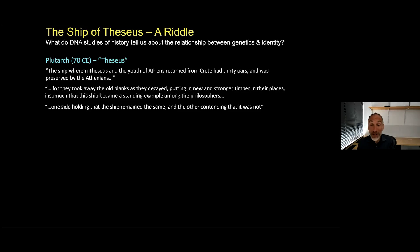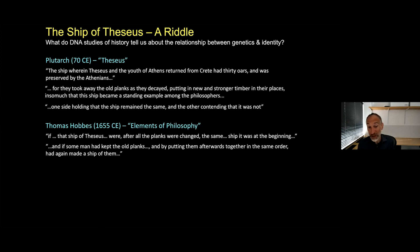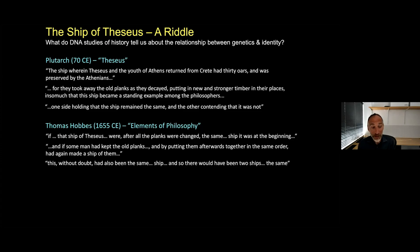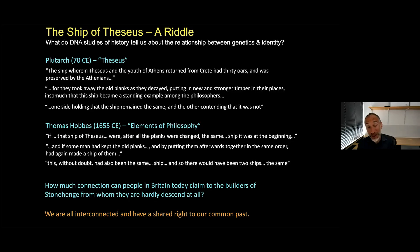This riddle relates to genetics: over time, are British people today the same as the British who built Stonehenge? Thomas Hobbes in 1655 added another element — if someone had kept the old planks and put them back together in the same order, making a ship of them again, then there would have been two ships the same. So the question is: what is identity? How much connection can people in Britain today claim to the builders of Stonehenge, from whom they are hardly descended at all? My view is that people in Britain can claim a lot of connection — it's the place where they live today, a place they can justifiably feel proud of. But I think we can all feel connected to Stonehenge because we're all connected to each other, and we all have a shared right to our common past.